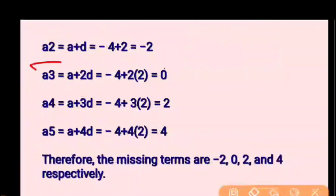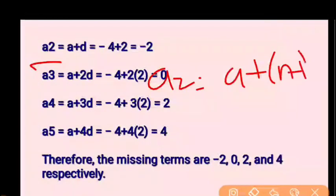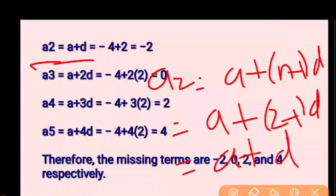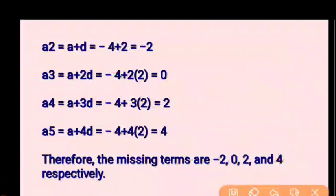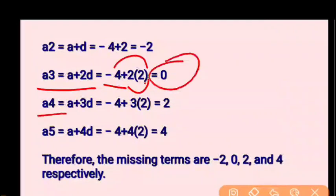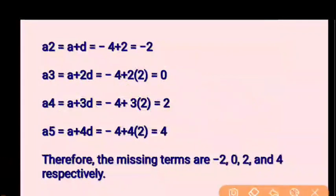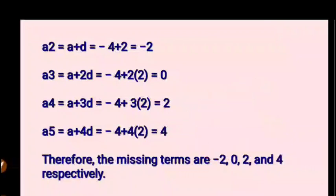With A = −4 and D = 2: A2 = A + D = −4 + 2 = −2. A3 = A + 2D = −4 + 4 = 0. A4 = A + 3D = −4 + 6 = 2. A5 = A + 4D = −4 + 8 = 4. So the missing terms are −2, 0, 2, and 4 respectively.